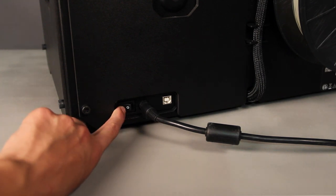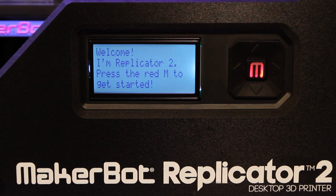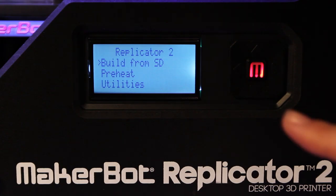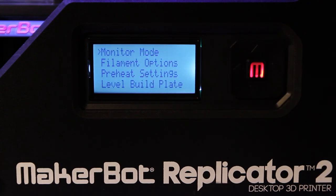The first time you turn on your MakerBot Replicator 2 desktop 3D printer, you should be greeted by this message on the LCD screen. If you don't see something like that, don't worry. Just go to Utilities in the main menu and select Run Startup Script.